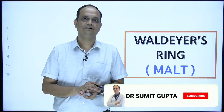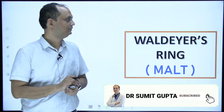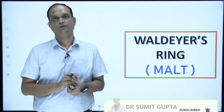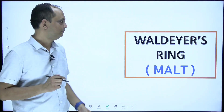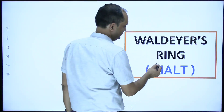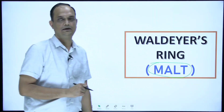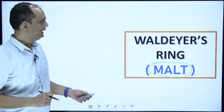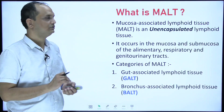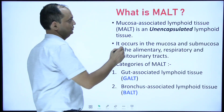Hello students, today we will discuss about Waldeyer's ring. Waldeyer's ring is actually a component of MALT. So we will discuss what is the meaning of MALT. MALT is actually known as Mucosa Associated Lymphoid Tissue.